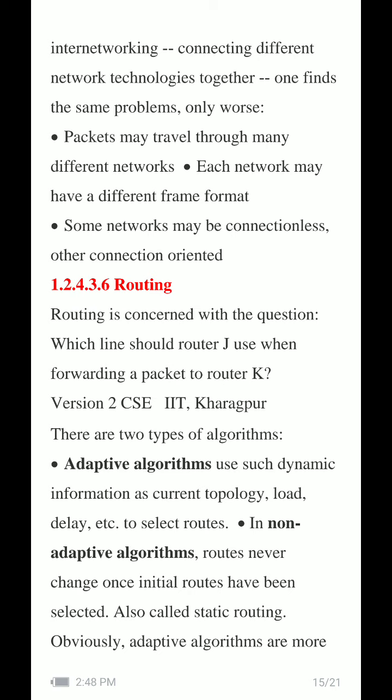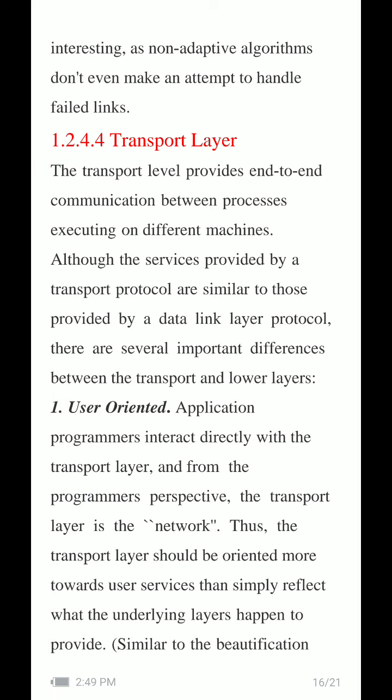There are two types of routing algorithms: adaptive and non-adaptive. The adaptive algorithm uses dynamic information about the current topology, load, and delay to select routes. In non-adaptive or static algorithms, routes never change once the initial routes have been selected. Routing is fundamentally concerned with the question of which line router J should use when forwarding a packet to router K.